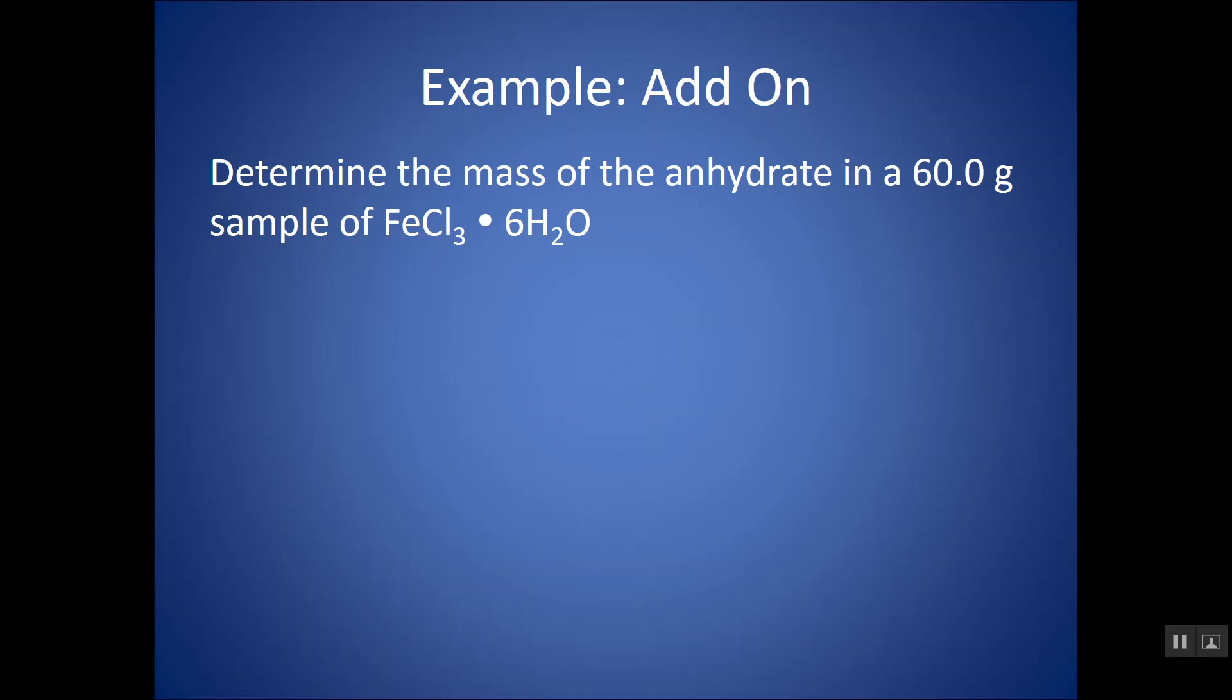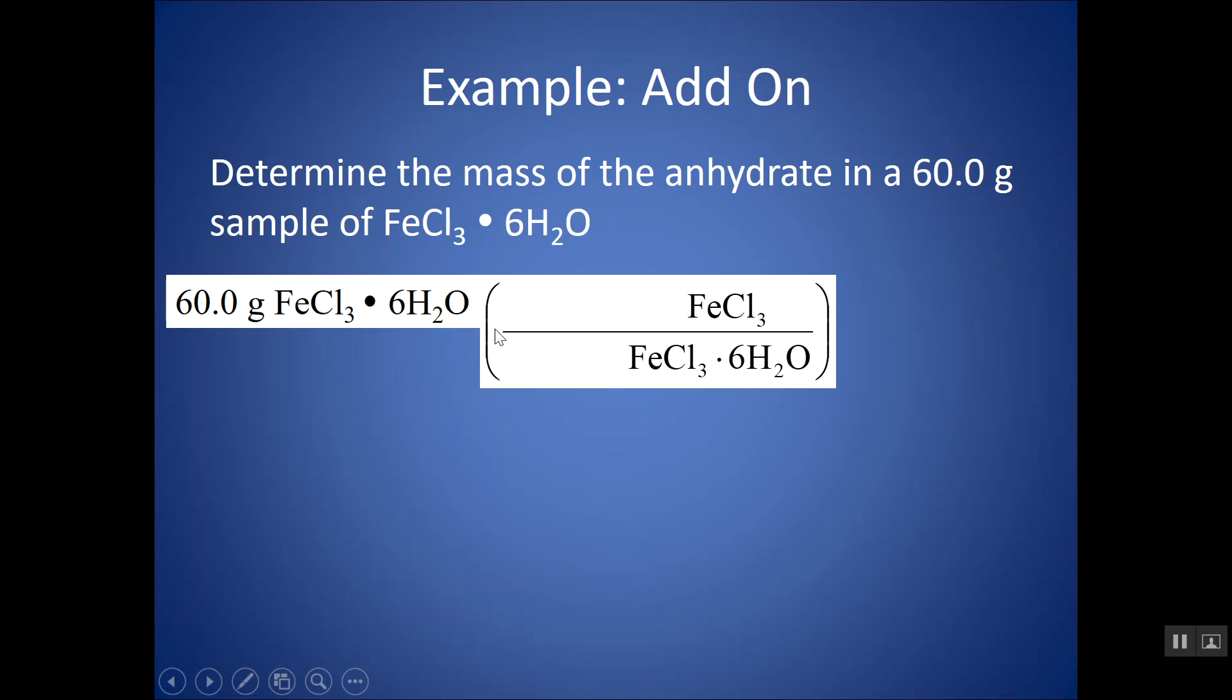Determine the mass of the anhydrate. Anhydrate means without the water. It means just the FeCl3 in 60 grams of the hydrate. So, let's start with 60 grams and be specific. Grams of what? Grams of this entire hydrate. And let's think about what I want my conversion factor to look like. Let's think about the units I want to start in and the units I want to end in. So, I want a conversion factor that has grams of FeCl3·6H2O, grams of the hydrate on the bottom. And I want grams of FeCl3 on top. Well, this is just using percent by mass as a conversion factor.